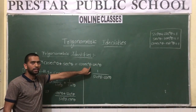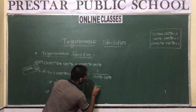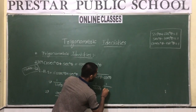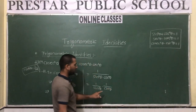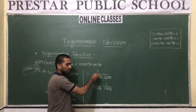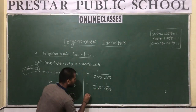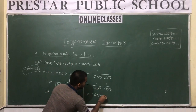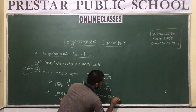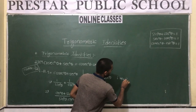We have 1/(sin²θ · cos²θ). Writing this as separate factors: 1/sin²θ · 1/cos²θ. Now 1/sin²θ = cosec²θ and 1/cos²θ = sec²θ. So we get cosec²θ · sec²θ, which is the required RHS. Therefore LHS = RHS. Hence proved.